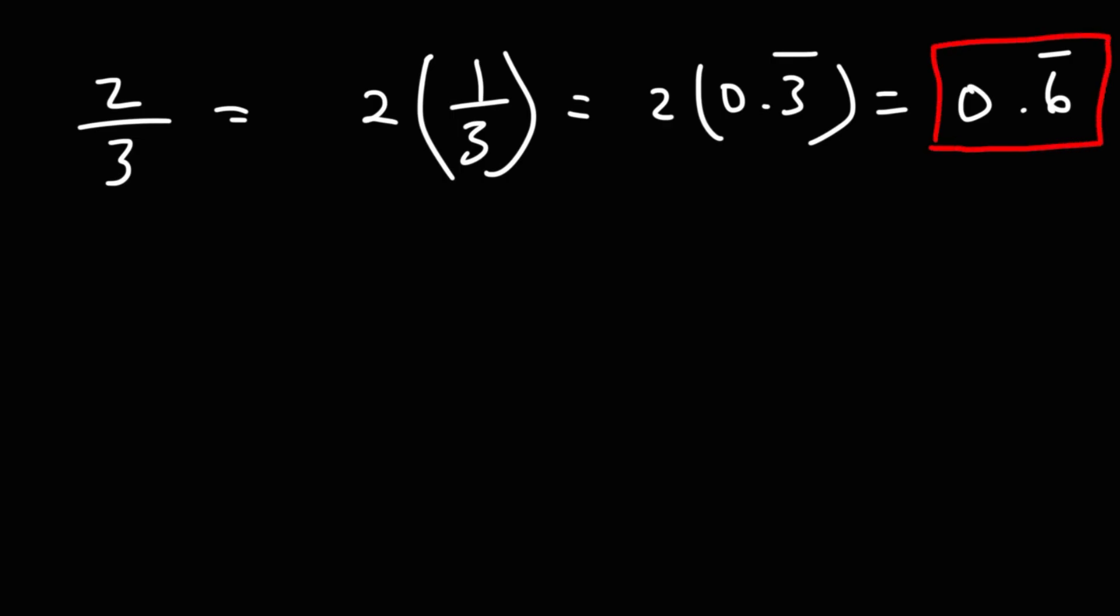Now, for instance, let's say if we want to convert 2 over 3 into a repeating decimal. 2 over 3 is basically 2 times 1 third. Now, we know that 1 over 3 is 0.3 repeating, so 2 over 3 is going to be twice that value, so it's going to be 0.6 repeating, since 3 times 2 is 6. So you can derive other answers from previous answers.